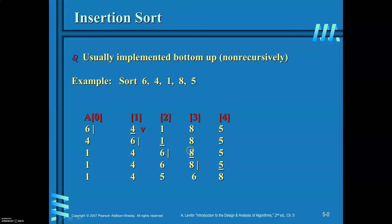Then 8 is to be inserted — it is already in the right position. Finally, insert 5 in the right place. Compare 5 with 8 — 8 is larger, move one position right. Again compare with 6 — 6 is larger, move right. Now 5 is compared with 4 — 4 is smaller, so this is the right place for 5. Insert 5 here.